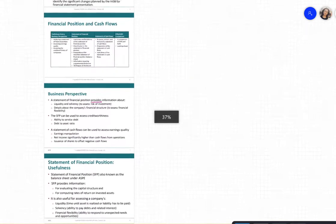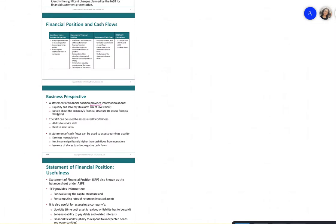The statement of financial position also provides information about the company's financial structure — specifically, financial flexibility. A high degree of financial flexibility means the company is able to survive better in bad times. It is also used to assess creditworthiness: the ability to service debt. The debt-to-asset ratio is key — a higher ratio means higher debt and higher risk to the bank.